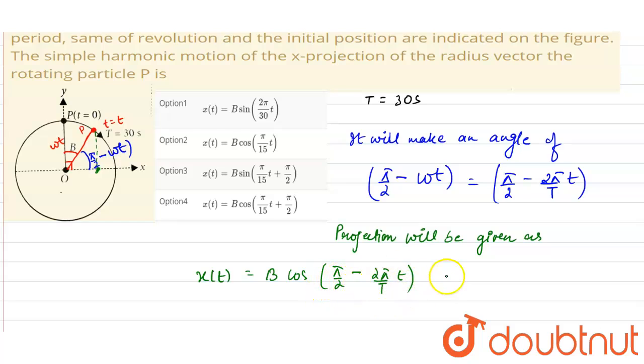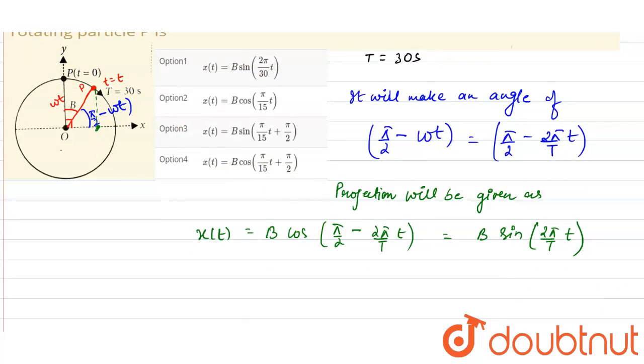Now cos(π/2 minus θ) is sin θ. So it will be B sin(2π/T times t). Now the time period of the cycle is given to us as 30 seconds.